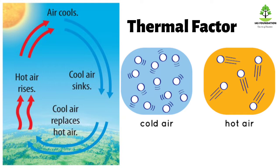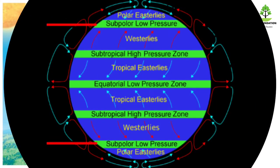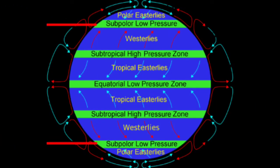In the equator, there is high insolation, but at the ground level it is low pressure. That's why I explained this in the past video. Normally, high temperature results in low pressure at the surface.